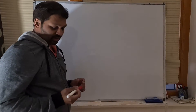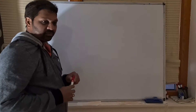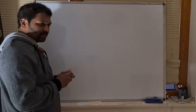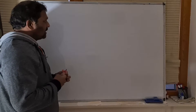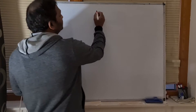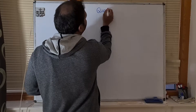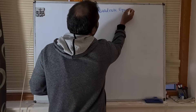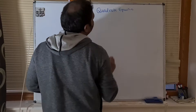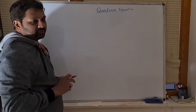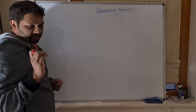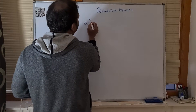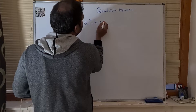Hello girls, let's talk about the quadratic equation — a few concepts around the quadratic equation. So, you know how to solve the quadratic equation. What is the general form of a quadratic equation? The general form of a quadratic equation is Ax² + Bx + C.